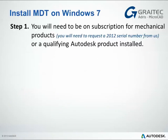Step 1 of the install process requires you to be on subscription for a Mechanical Product. This gives you the ability to request a 2012 serial number, and for that to be inputted into the next part of this process. In order to get your Mechanical Desktop up and running, you will need a Qualifying Product installed on your machine.